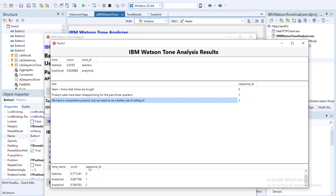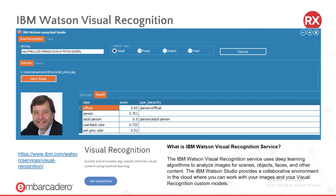That all works just fine. Next, let's look at using the IBM Watson Visual Recognition Service and the power of artificial intelligence from Delphi and/or C++ Builder. The IBM Watson Visual Recognition Service uses deep learning algorithms to analyze images for scenes, objects, faces, and other content. IBM Watson Studio provides a collaborative cloud environment where you can work with images and visual recognition custom models.